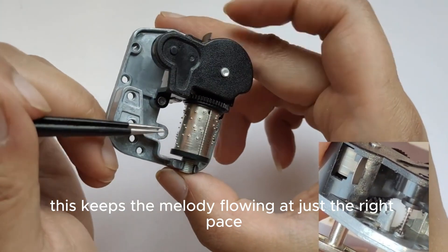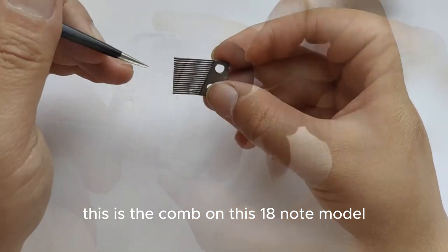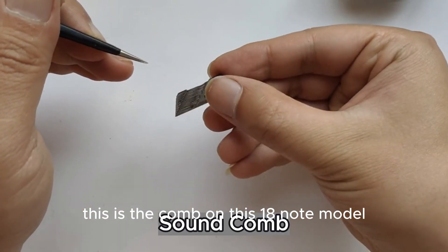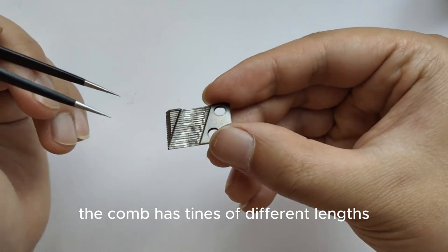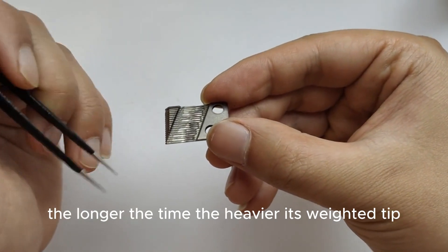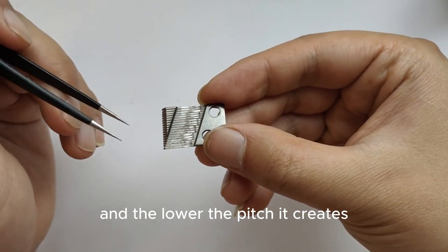This is the comb. On this 18 note model, the comb has tines of different lengths. The longer the tine, the heavier its weighted tip, and the lower the pitch it creates.